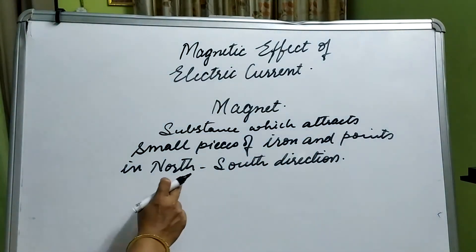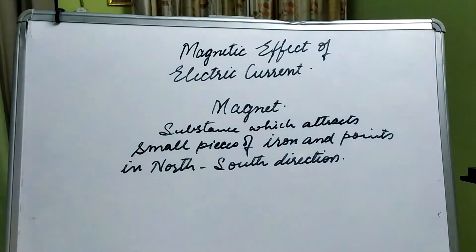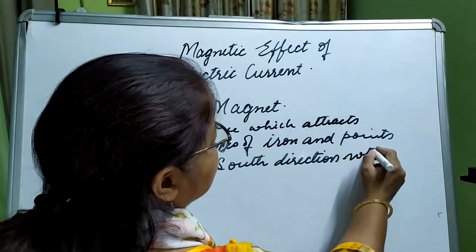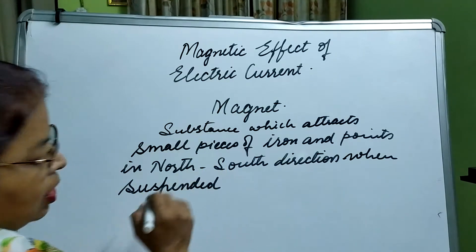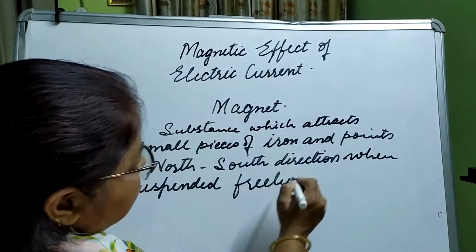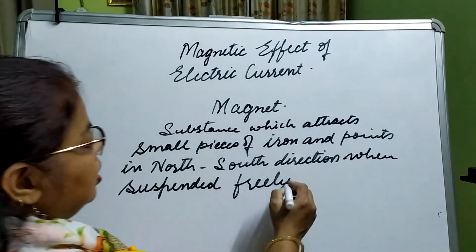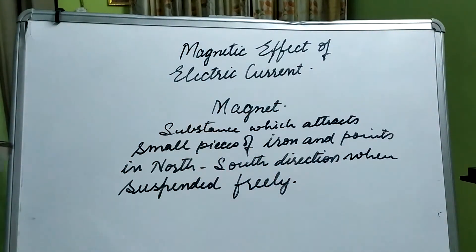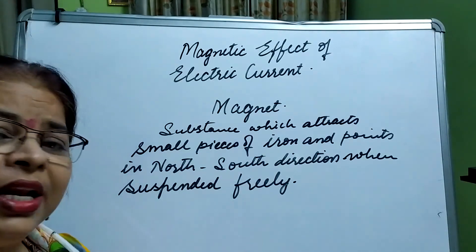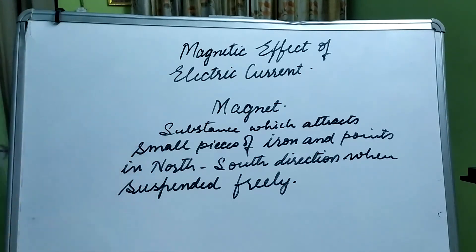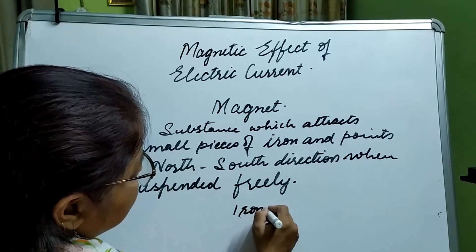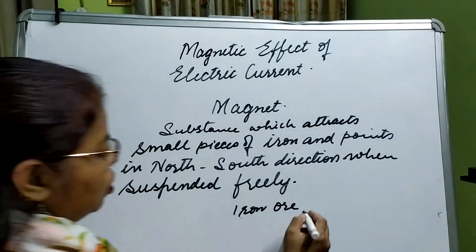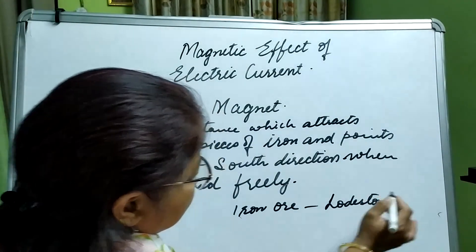When does it align itself or point in the north-south direction? When it is suspended freely, or we can say hung freely, then such a substance is called a magnet. A naturally occurring magnet is called lodestone — L-O-D-E-S-T-O-N-E. It is an iron ore found in the crust of the earth.